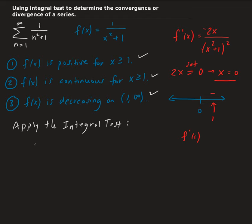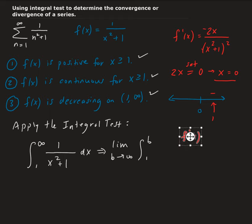We have our improper integral going from 1 to infinity, taking the integral of 1 over x squared plus 1. Since this is an improper integral, we need to take the limit as b approaches infinity of the integral from 1 to b of 1 over x squared plus 1.